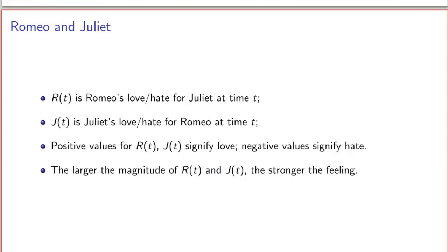Let's build a mathematical model that describes Romeo and Juliet's love for each other as functions of time. We're going to use R(t) as a function that describes Romeo's love and hate for Juliet, and J(t) as Juliet's love and hate for Romeo. Positive values signify love, negative values mean hate, and the larger the magnitude of R(t) and J(t), the stronger the feeling.